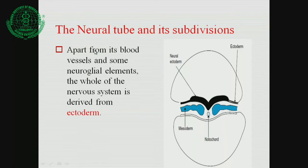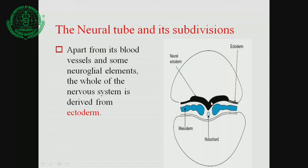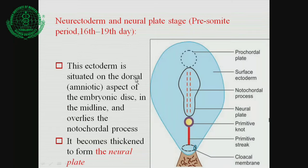The neural tube develops from the ectoderm. Apart from its blood vessels and some neuroglial elements, the whole of the nervous system is derived from the ectoderm. The first stage is the neuroectoderm and neural plate stage, occurring during the pre-somite period on the 16th to 19th day of intrauterine life.